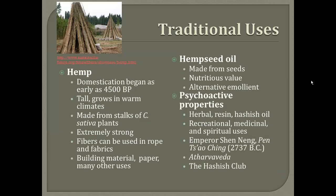Marijuana has had a lot of medicinal and non-medicinal uses. I have a picture of a hemp hut. Hemp was probably the first product that was made out of Cannabis sativa. Its domestication started in China around 4,500 BP, and it's tall and grows in warm climates. Hemp is usually made from the stalks of Cannabis sativa plants, and they were used as fabrics because they're extremely strong. It was an important American crop in the early days, but it decreased because of its legal status. Besides making fabric, it can also be used to make rope, building material, paper, and other uses. Today, most ropes are made of nylon and cotton, but hemp ropes still exist.